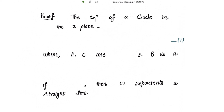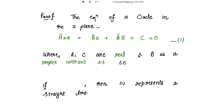Now starting with the proof. The equation of a circle in the z-plane is: A·z·z̄ + B·z + B̄·z̄ + C = 0, where A and C are real and B is a complex constant, such that B·B̄ is strictly greater than A·C. Mark this as equation 1. If A = 0, then equation 1 represents a straight line.